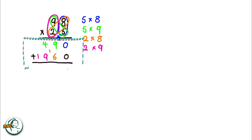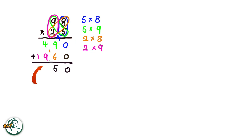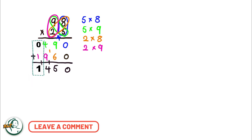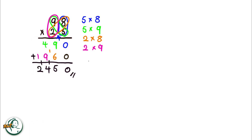Now we add these two sets of products. Adding 0 and 0 gives us 0. 9 plus 6 is 15; we write down the 5 and carry over the 1. And 4 plus 9 is 13; adding the carried over 1 to 13, we get 14. We write down the 4 and carry over the 1. 0 plus 1 is 1, and adding the carried over 1 to 1, we get 2. Therefore, the product of 98 and 25 is 2,450.